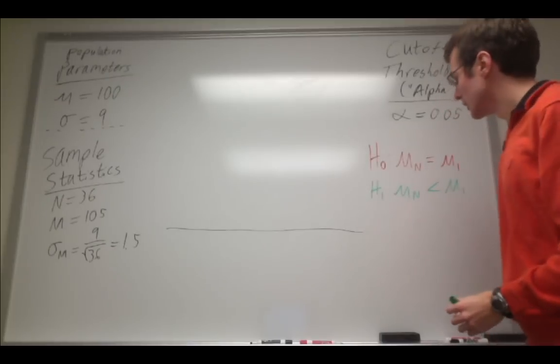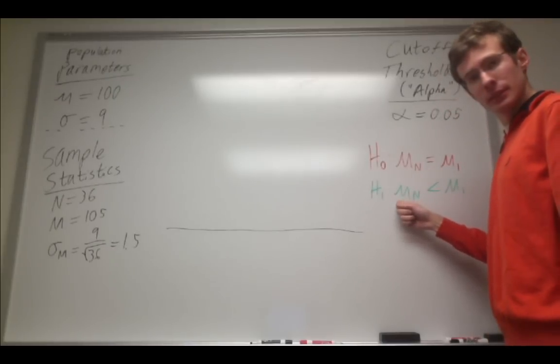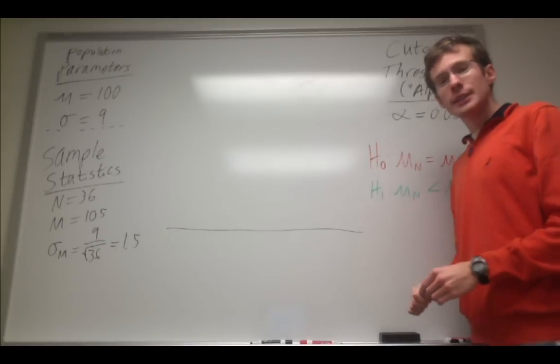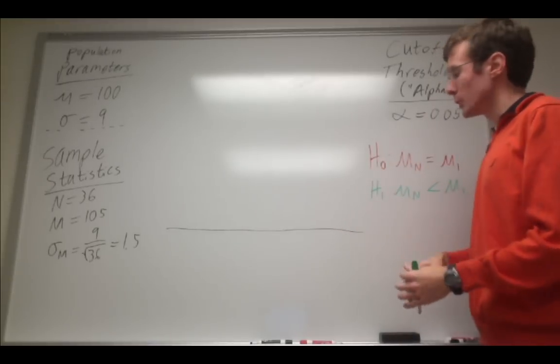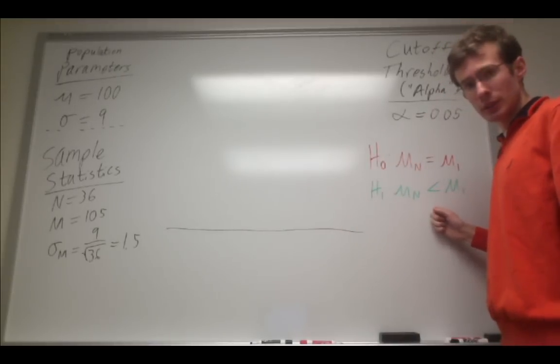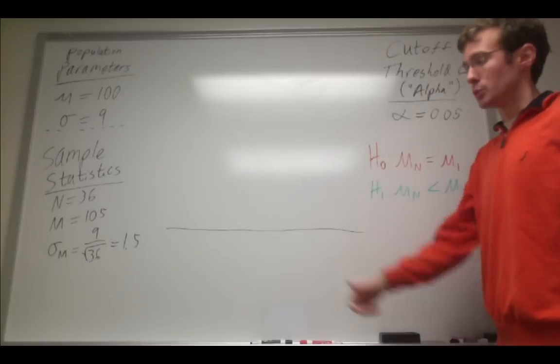This is important because when I evaluate the results of my experiment, they need to not only be past a certain threshold or cutoff, but they also need to be in the right direction. It needs to be greater than the null distribution.